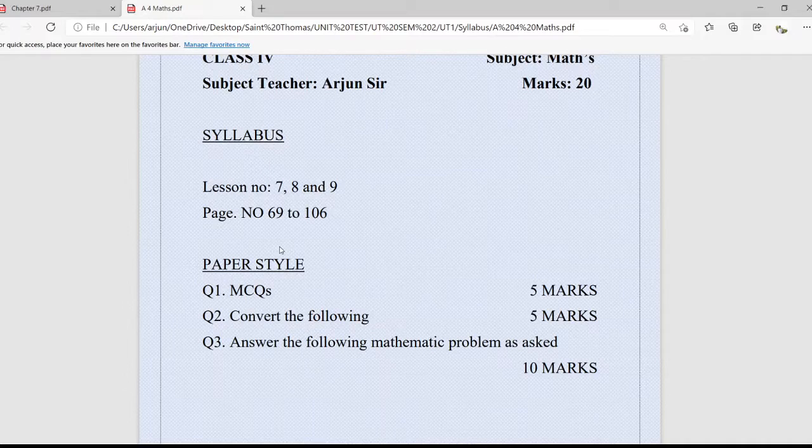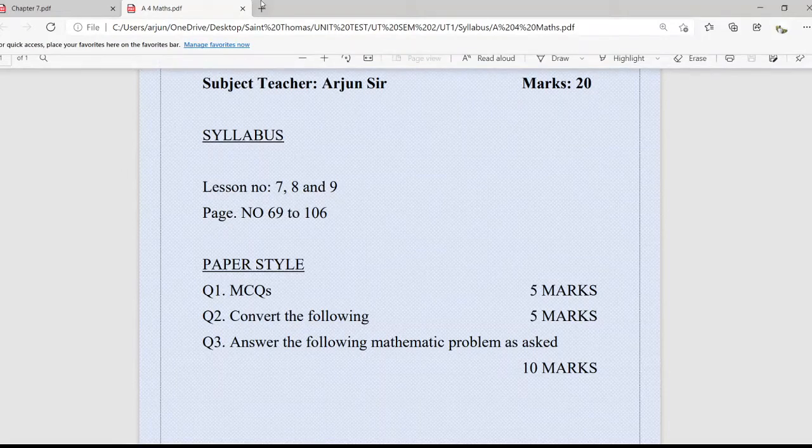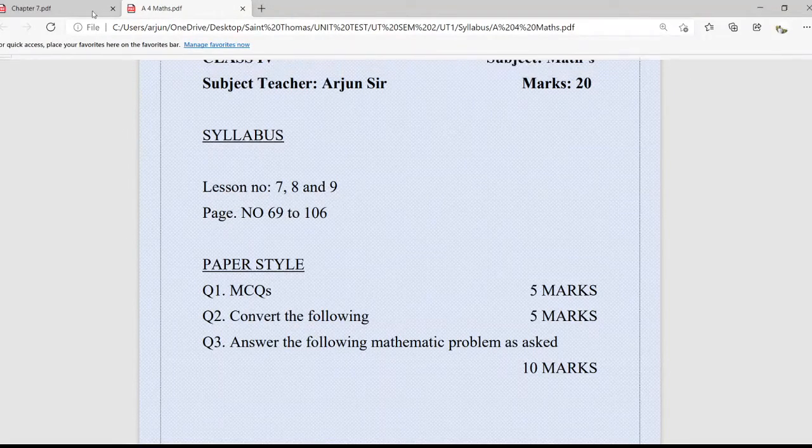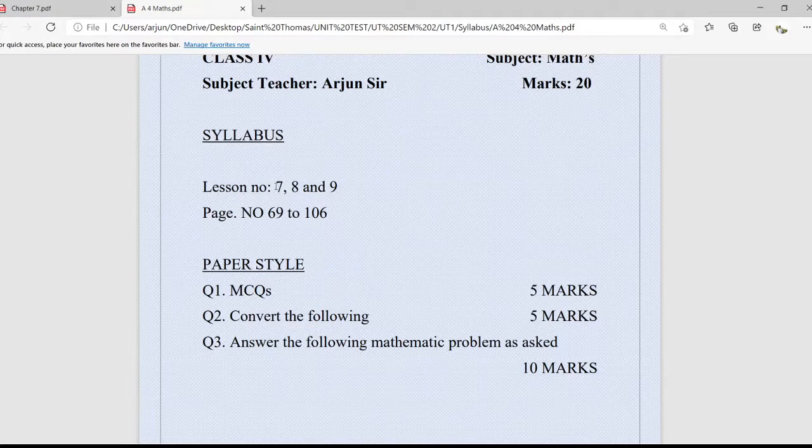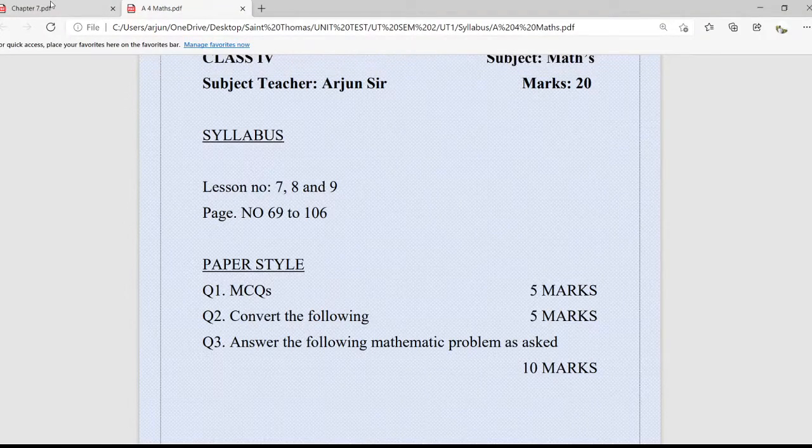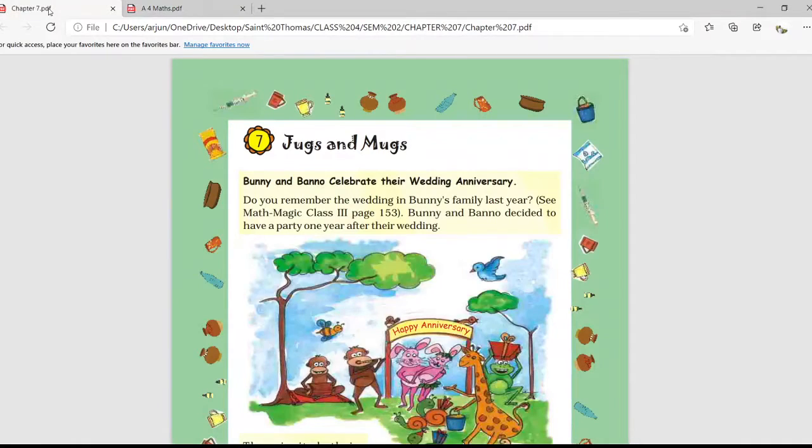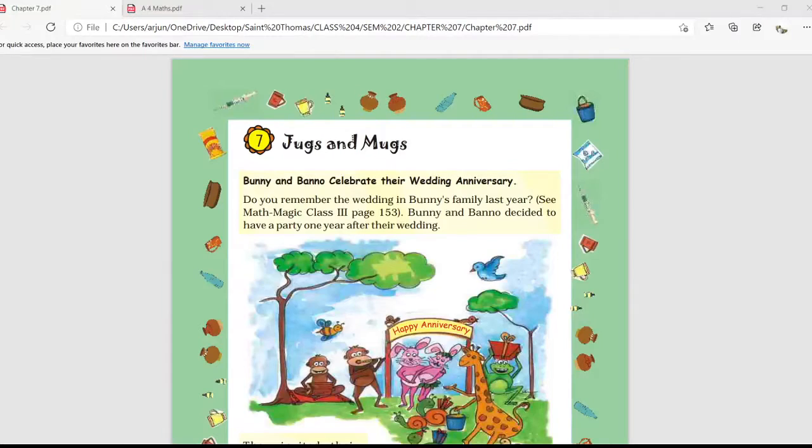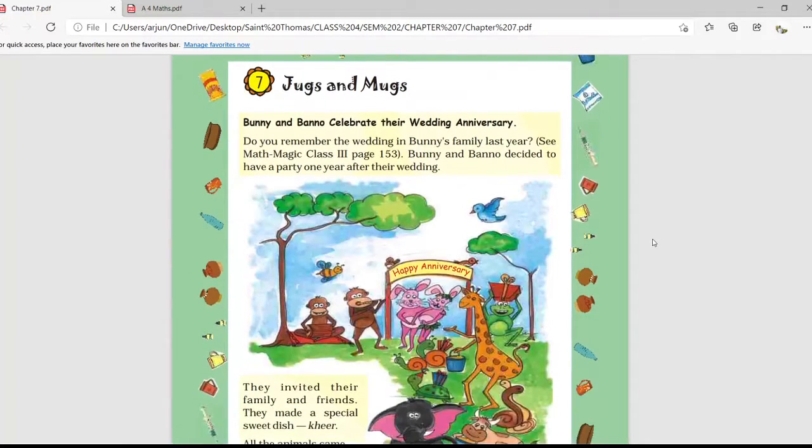Total marks will be 20. So today we will see an overview of chapter number seven, and in the next lecture we will go in detail for chapter number seven. Chapter number seven was Chugs and Mugs.